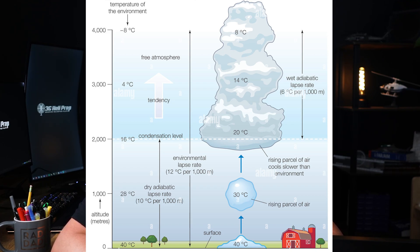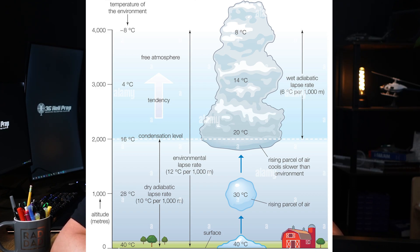There's also something called the Moist Adiabatic Lapse Rate, or MALR. When air is saturated with moisture, it cools at a slower rate as it rises — typically 1.5 degrees Celsius to 3 degrees Celsius per thousand feet, depending on the moisture content. This slower rate occurs because condensation releases latent heat, which partially offsets the cooling.